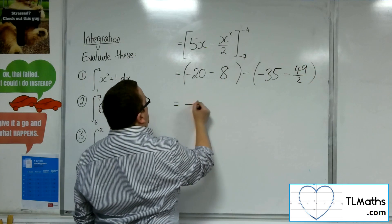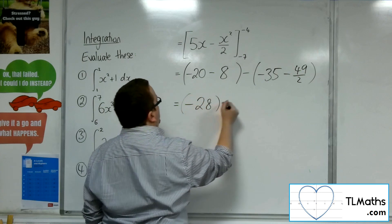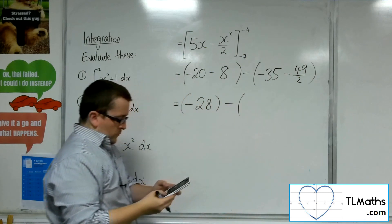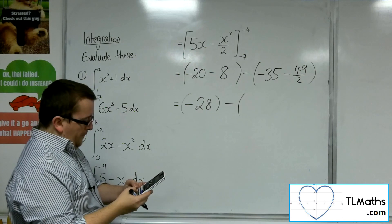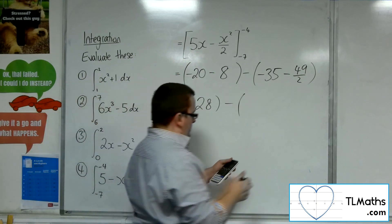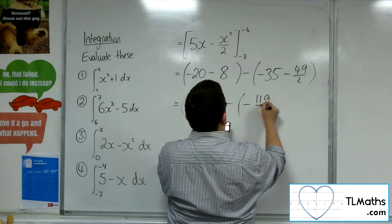So we've got minus 28 in the first bracket. We've got minus 35 take away 49 over 2, so minus 119 over 2.